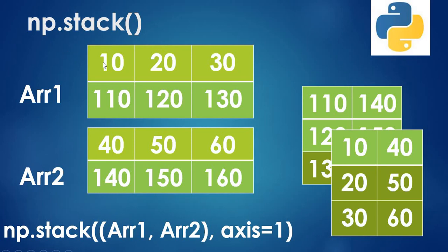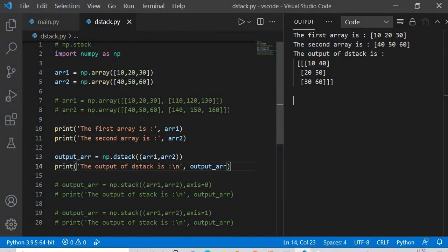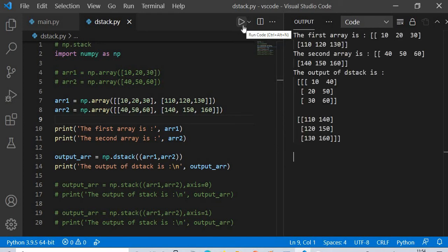For a 2D case with dstack, the first element of array one (10) combines with the first element of array two (40) giving [10, 40], then [20, 50], [30, 60] for the first row. Similarly, [110, 140], [120, 150], [130, 160] for the second row. Running the code confirms: 10, 40 — 20, 50 — 30, 60 — 110, 140 — 120, 150 — 130, 160. That is the output of the depth-wise stack.